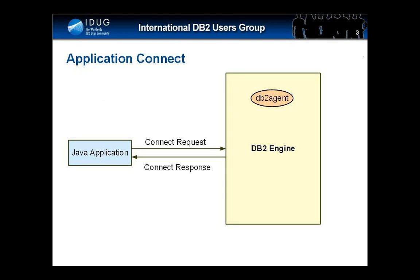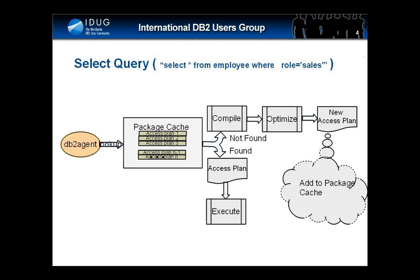Once the DB2 agent receives the query from the application, it begins its work. Before the data can be retrieved from the database, the query has to be compiled. This is an expensive operation. In order to improve performance, DB2 caches compiled statements in volatile memory in an area called the package cache.